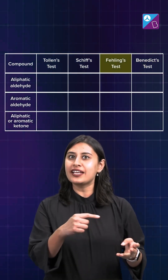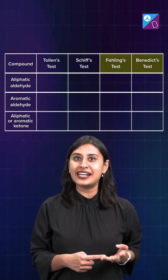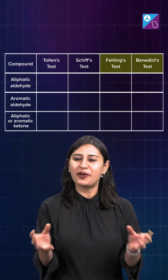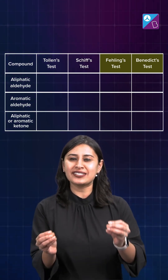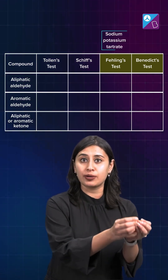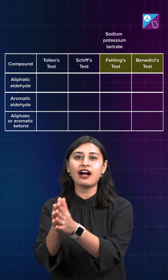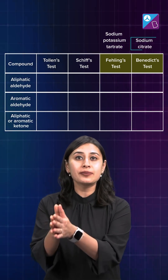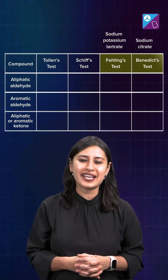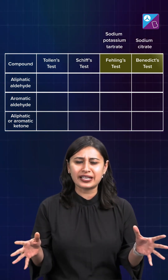Fehling's test and Benedict's test are like brothers. All that is changing is instead of Fehling B, which is sodium potassium tartrate, you have sodium citrate in Benedict's test. Rest, everything is same.